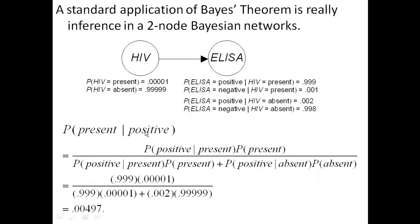Remember, we had this formula before. The probability of present equals positive. That's positive equals present times the probability of present. Divided by the probability of positive given present times the probability of present, plus the probability of positive given absent times the probability of absent. It turned out to be .005.